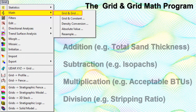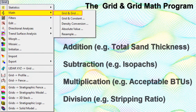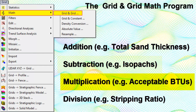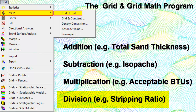The Grid and Grid Math program performs arithmetical operations with the grid node Z values in two existing grid files. Examples include adding thickness values in two ISAPAC grid files to determine total thickness of adjacent beds, subtracting formation top elevations to generate an ISAPAC model, multiplying a coal thickness grid file by a Boolean grid file to generate a thickness model of acceptable areas only, and dividing a grid model of overburden values by a grid representing clay seam thickness to determine stripping ratio.